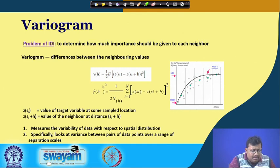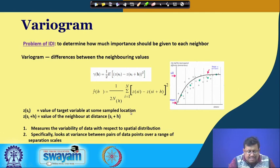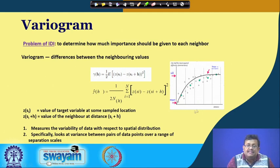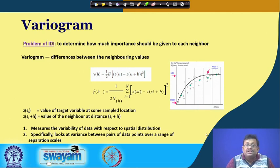The variogram is essentially a graph between the distance between point pairs and the variance of values between those pairs. The mathematical formula: z(Si) is the value of the target variable at a sample location, z(Si+h) is the value of the neighbor at distance Si+h, and n is the number of point pairs. Using this formula we can plot this graph, which is called the semi-variogram.